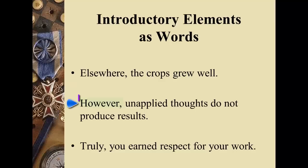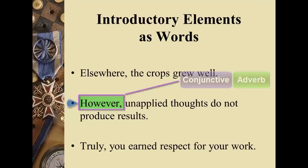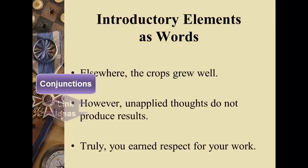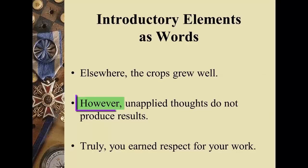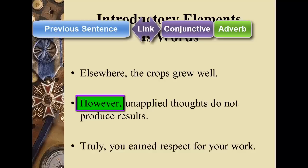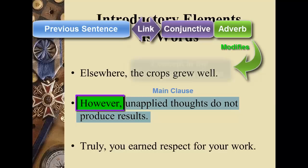In the second example, 'however' is a conjunctive adverb that modifies a stand-alone complete thought: 'However, unapplied thoughts do not produce results.' Conjunctions link ideas — they can link words, phrases, or clauses. Adverbs modify words, phrases, or clauses. Therefore, 'however' is a conjunctive adverb because it's linking whatever sentence came before this one, and it's also modifying the concept by creating the idea of contrast or opposition.